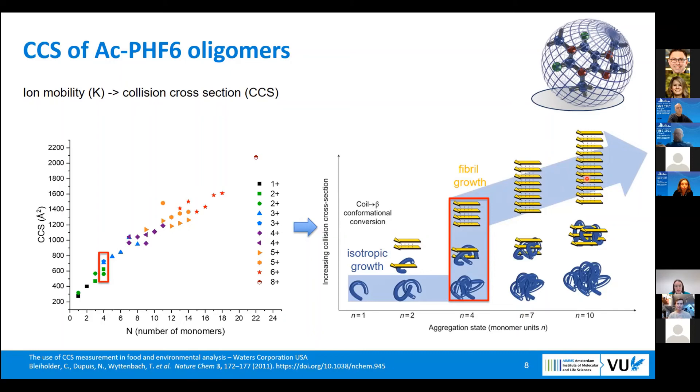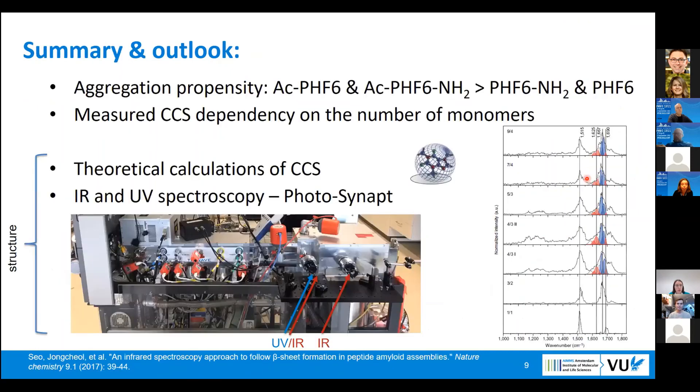With that, I would like to conclude. What we've shown: we've shown the difference in aggregation propensity for acetyl-capped peptides and non-acetyl-capped peptides. We also measured the CCS dependency on the number of monomers within oligomers.